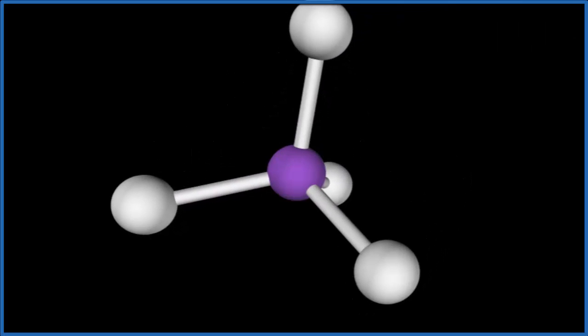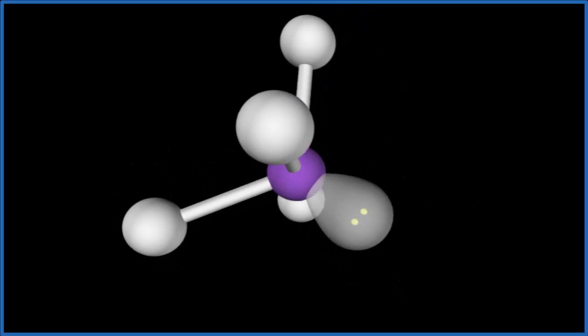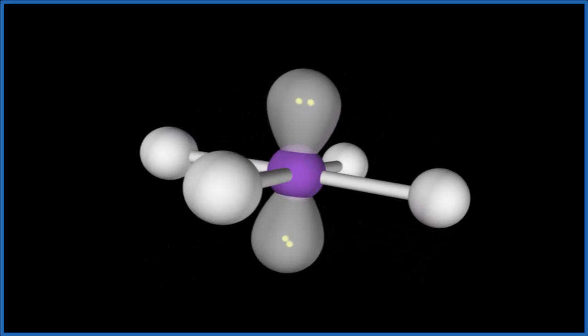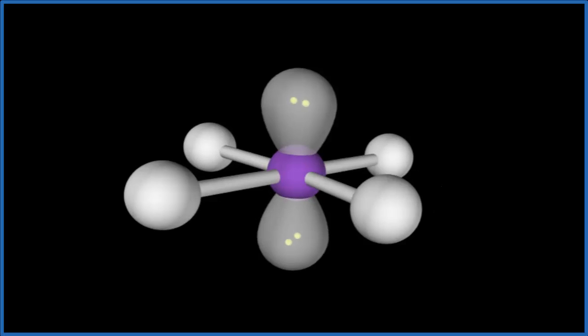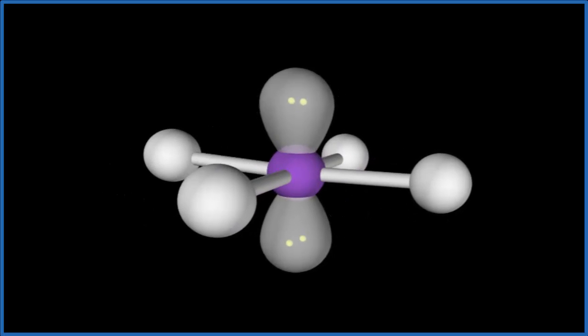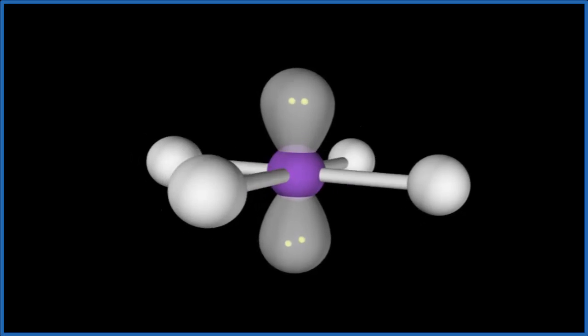That gives us a tetrahedral molecular geometry, but we have those two lone pairs. One, two - and now we can see we end up with what's called a square planar molecular geometry. This is a symmetrical molecular geometry. We have the fluorines here, each one in this square plane, then our lone pairs up on the top and bottom.